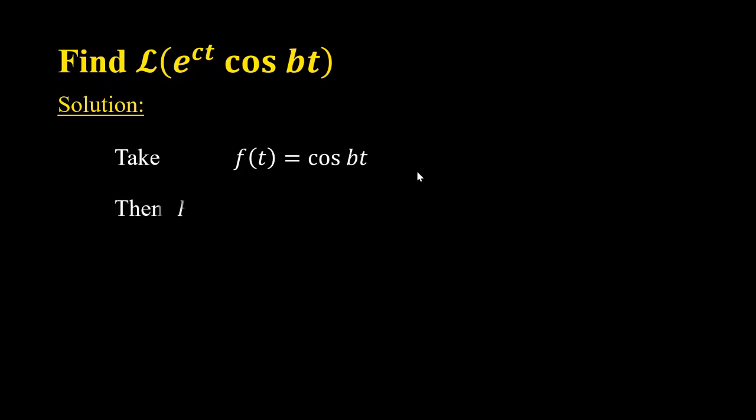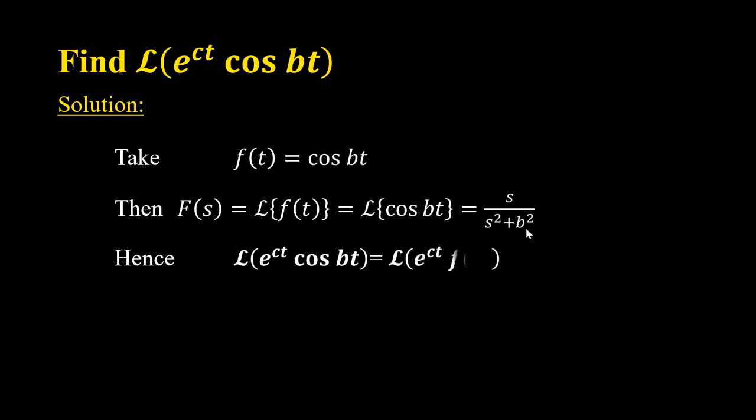The transformation for cos bt is s by s square plus b square. So L of e raised to ct times cos bt becomes s minus c over s minus c whole square plus b square.